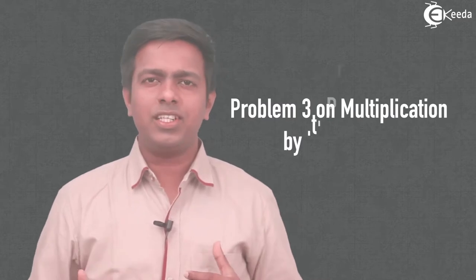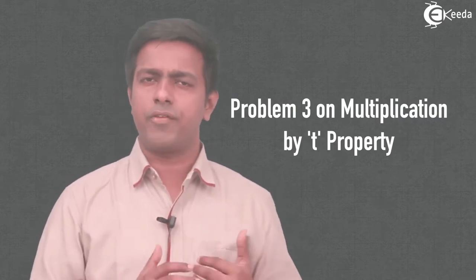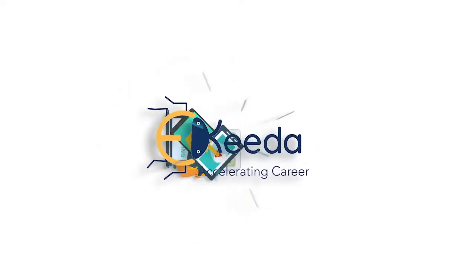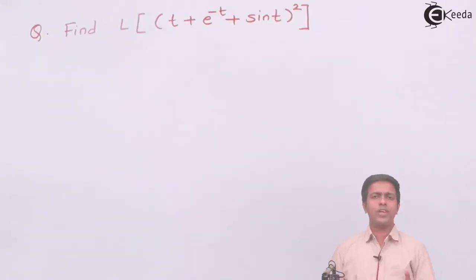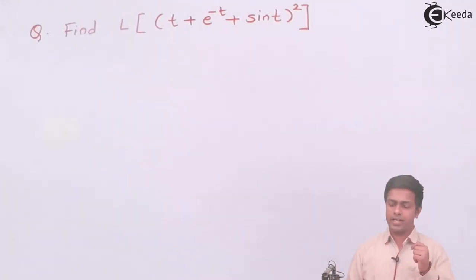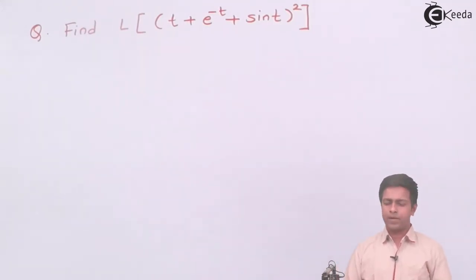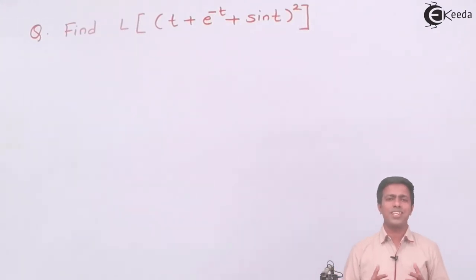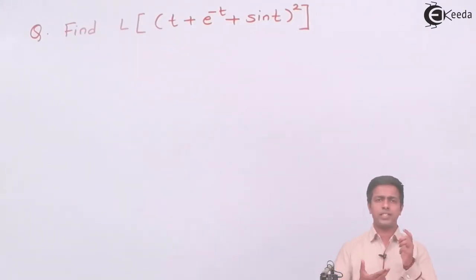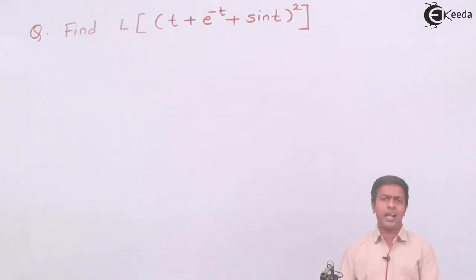After finishing two numericals on multiplication by t property, let's move to the next numerical on multiplication by t property. The difficulty level will be higher than the previous numerical. We have to find out the Laplace of (t + e^(-t) + sin t) the whole square. We cannot directly see that we have to apply multiplication by t property, because for that property we should have a function in the form t·f(t).